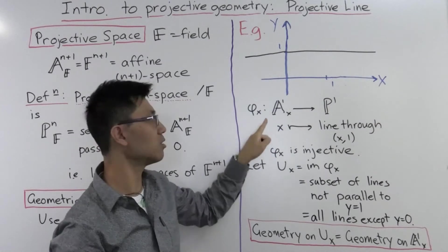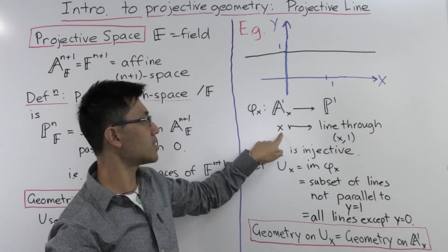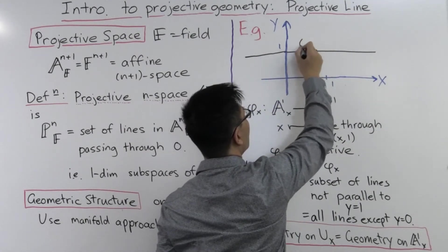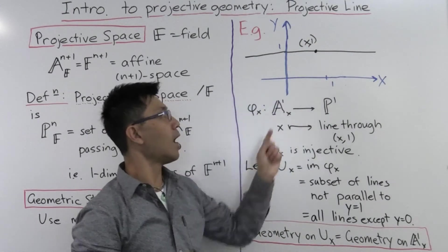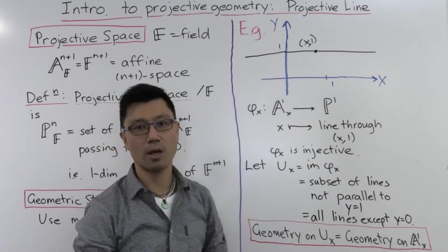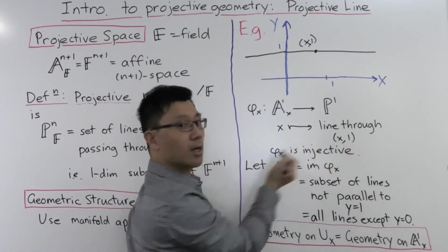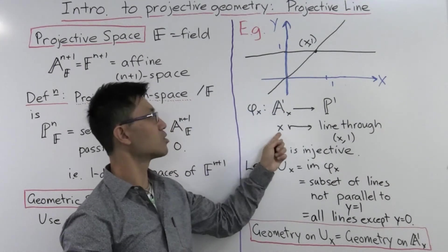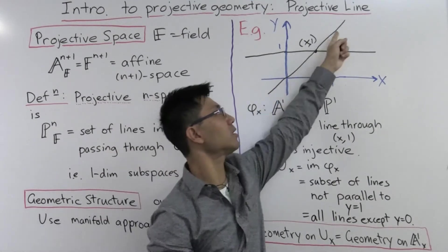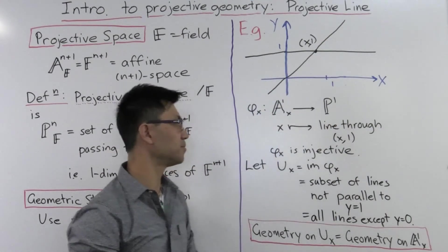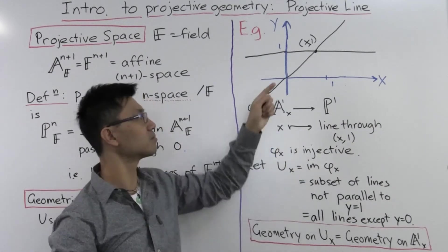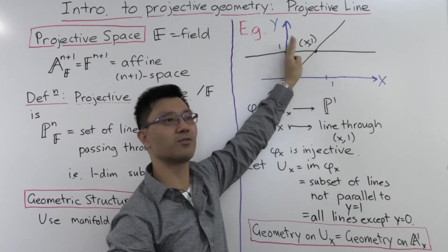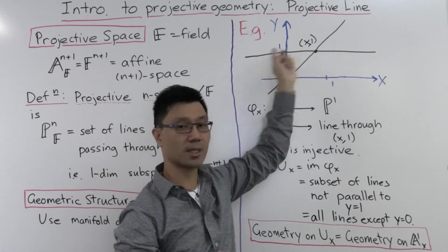We do this by introducing the function φ_x from A^1_x to P^1. It maps the point x — which corresponds to the point (x, 1) since we're looking at the line where y equals 1 — to the line through (x, 1) and 0. So x, the point on the affine line, gets mapped to this line, which is a point on the projective line. Now φ_x is injective: if you change this point, you do actually move the line, so you get a different line.